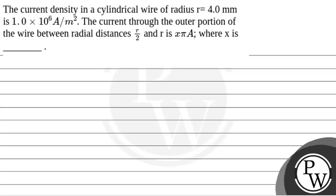Let's read the question. The question says that the current density in a cylindrical wire of radius r equal to 4 mm is 1.0 × 10⁶ ampere per meter squared. The current through the outer portion of the wire between radial distances r/2 and r is xπ ampere, where x is to be found.